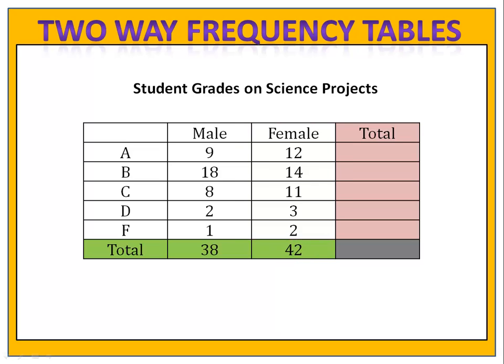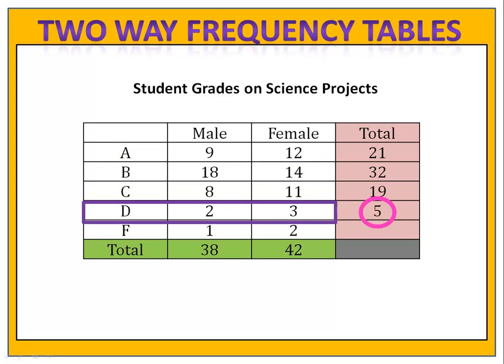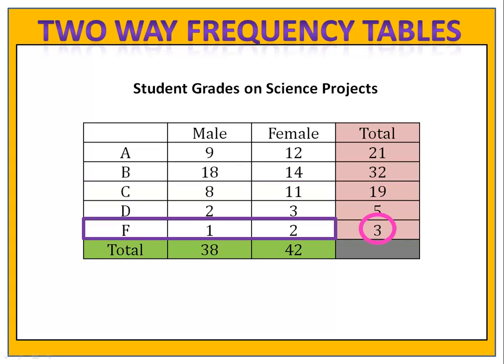We can also find out the total number of students who got each grade. Adding across: nine males and twelve females gives twenty-one people who got an A. Eighteen males and fourteen females gives thirty-two people who got a B. Adding across again, nineteen people got a C, five got a D, and three got an F.